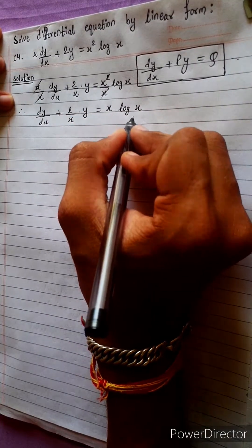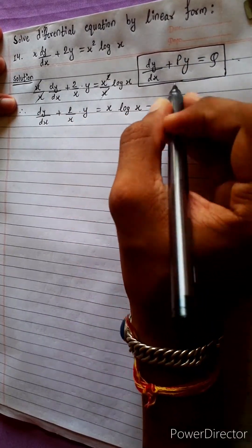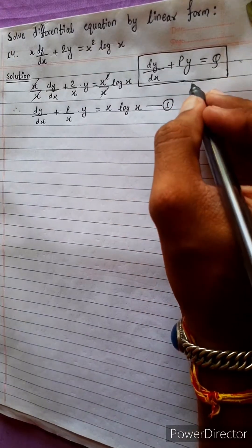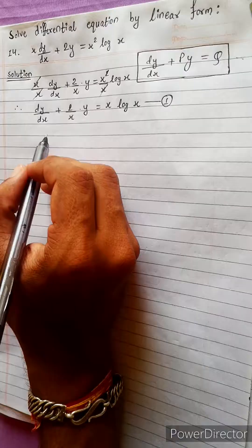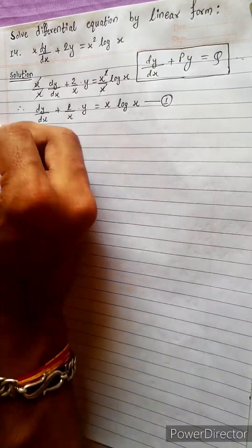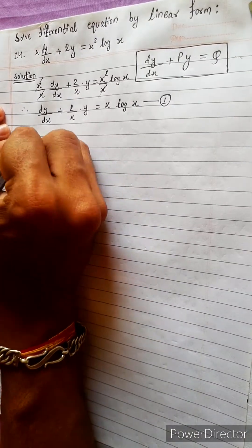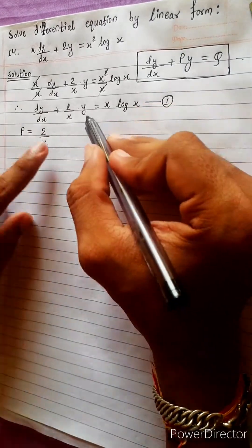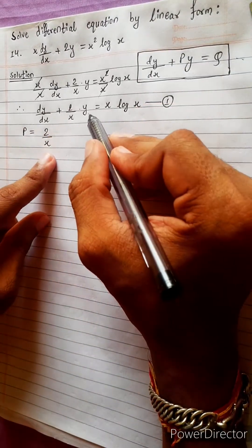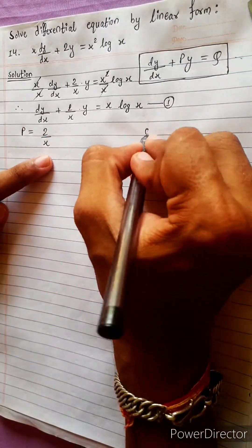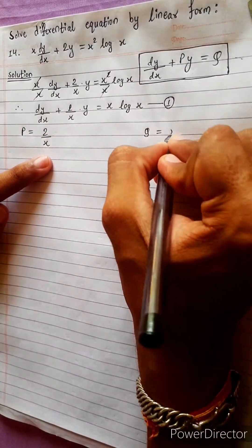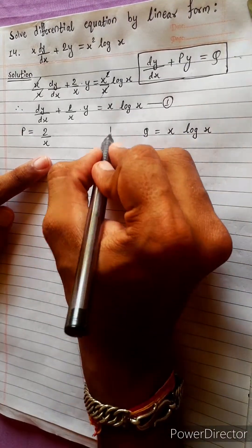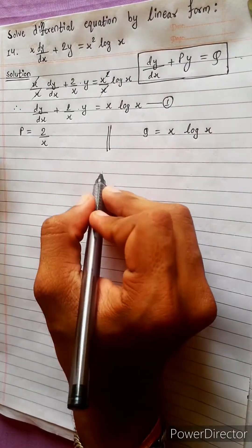This is our equation 1. Now let's compare this with the standard linear form formula. On comparing, the value of P comes out to be 2/x, because py = (2/x)y. And the value of Q is x log x.